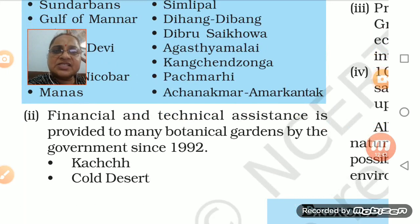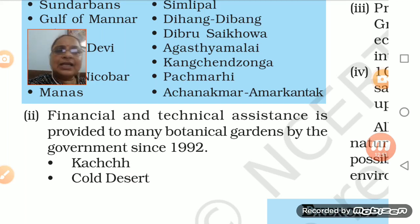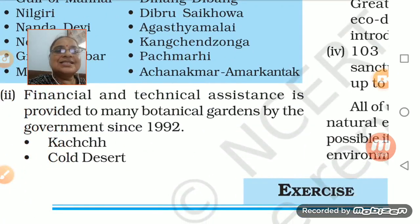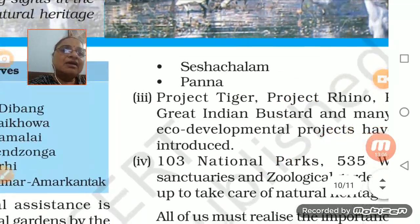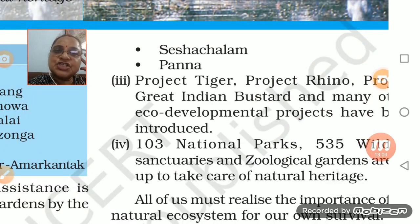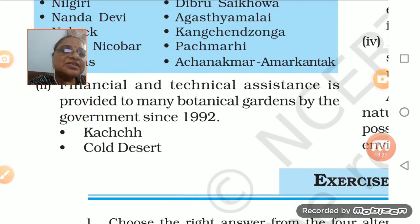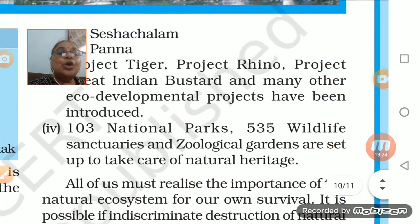The government always gives financial and technical assistance to protect these animals. Many botanical gardens are dedicated to them by the government. Since 1992, such as Kutch area - cold desert area - the government is spending a lot of money for the preservation of these animals. Then Sheshachalam, Panna - these are also areas where the government is spending a lot of money for the preservation of wildlife.